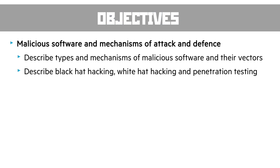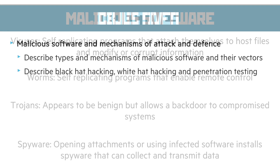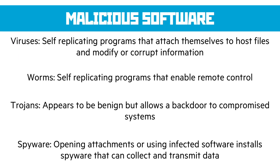The final section covers malicious software and the mechanics of attack and defense. The big four types are viruses, worms, trojans, and spyware. Viruses are malicious pieces of software designed to modify or corrupt information, and they copy themselves. Worms also copy themselves but are mainly there to remotely control the computer they infect. Trojans appear to be benign software but often allow backdoor access to a compromised system. Spyware is installed through opening attachments or using infected software, and it can collect and transmit data to a third party.